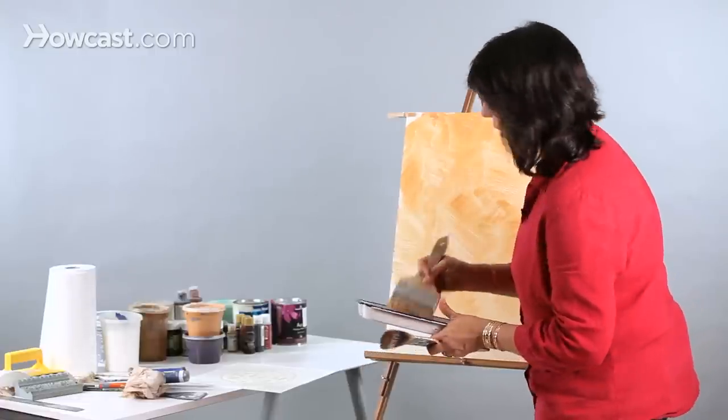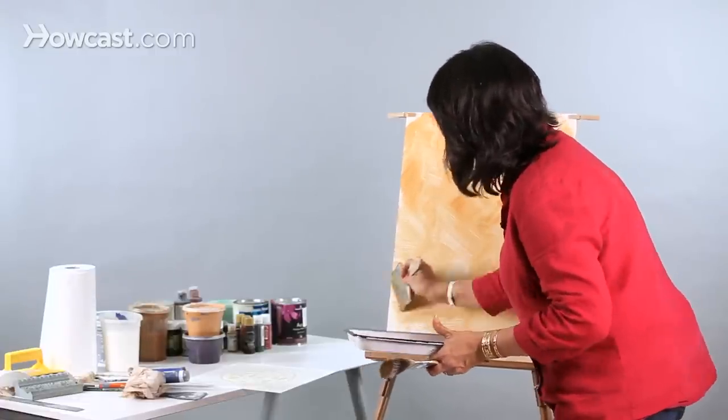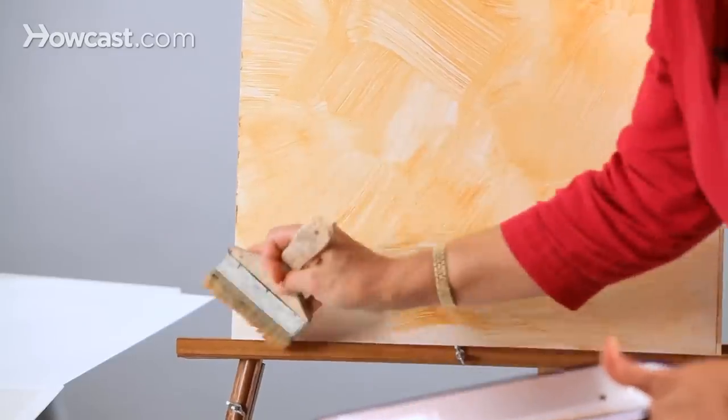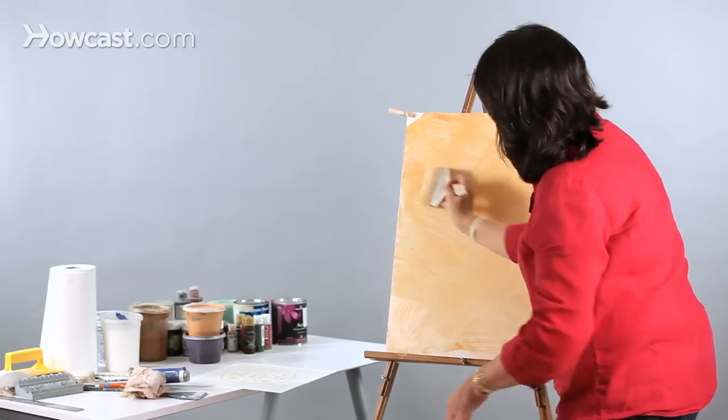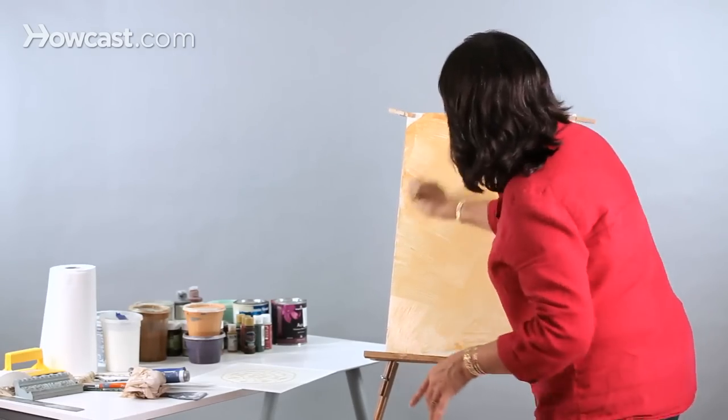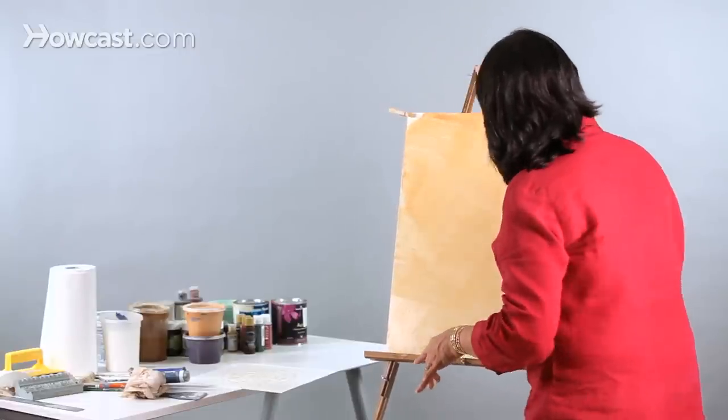Color washing by and large is done in terracottas or warm siennas, very Tuscan colors. As you can see, the hatching, the crosshatching is becoming much bigger.